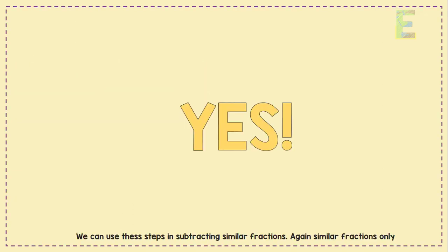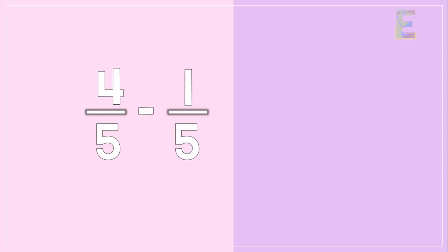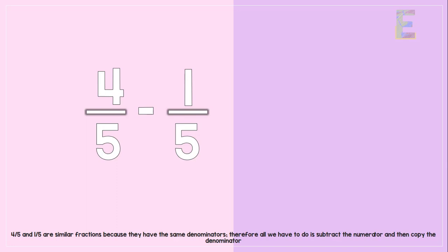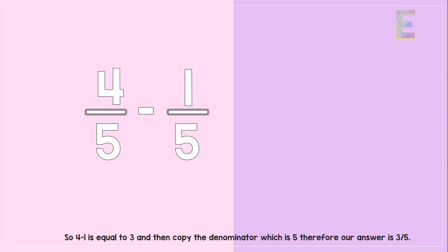The answer is yes — we can use these steps in subtracting similar fractions, again for similar fractions only. For an example, let's have: 4 over 5 minus 1 over 5. These are similar fractions because they have the same denominators, therefore all we have to do is subtract the numerators and then copy the denominator. So 4 minus 1 is equal to 3.